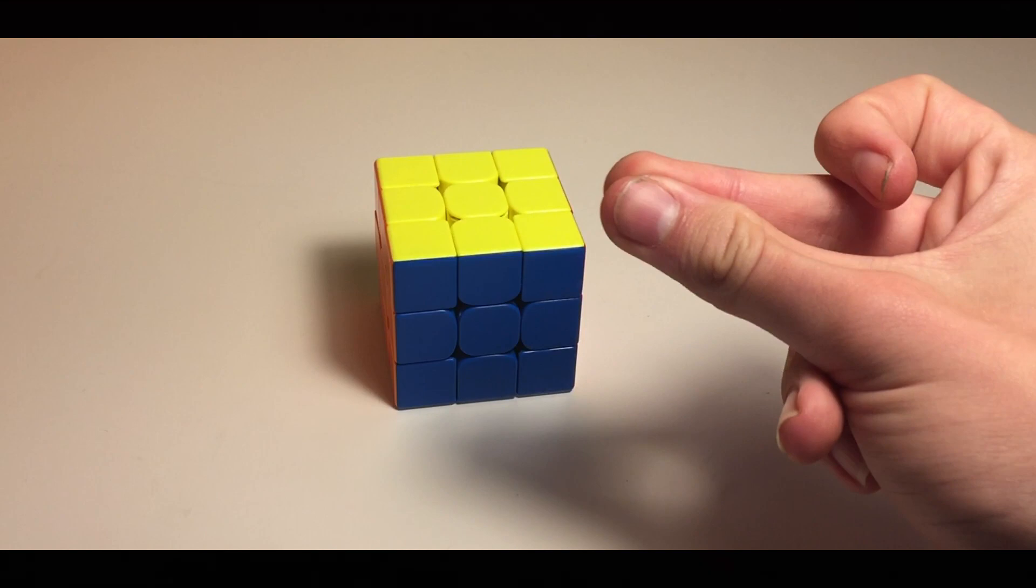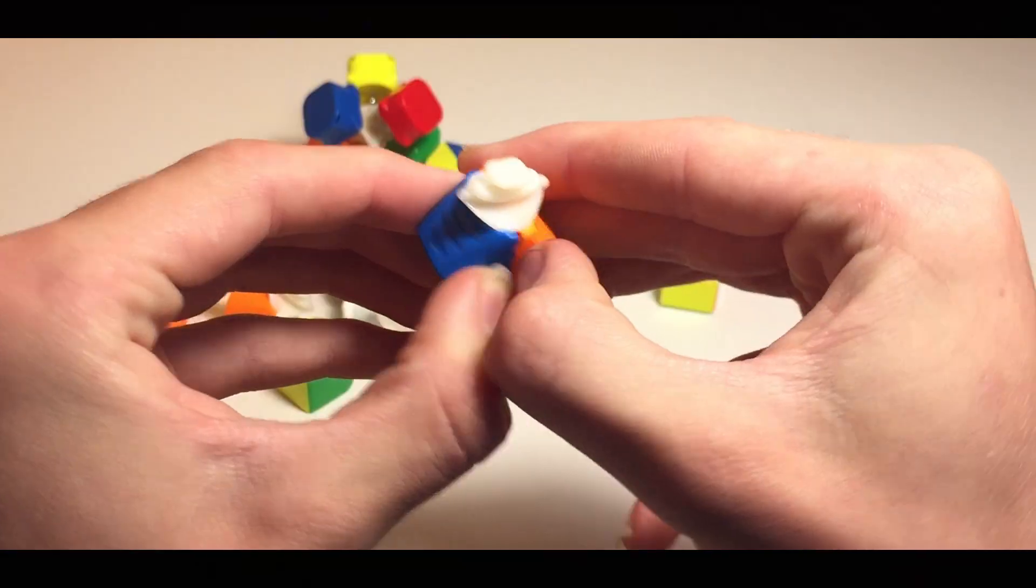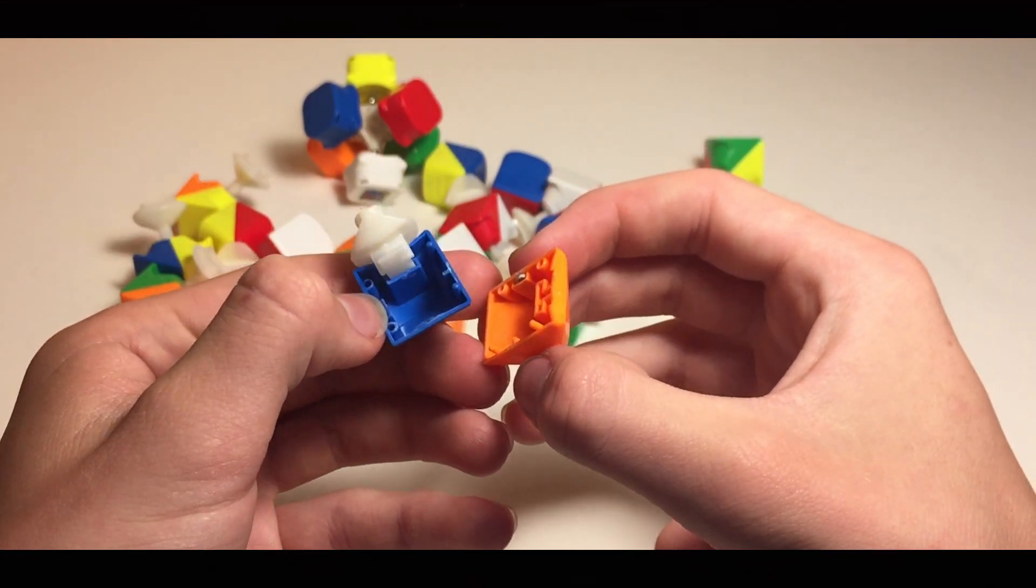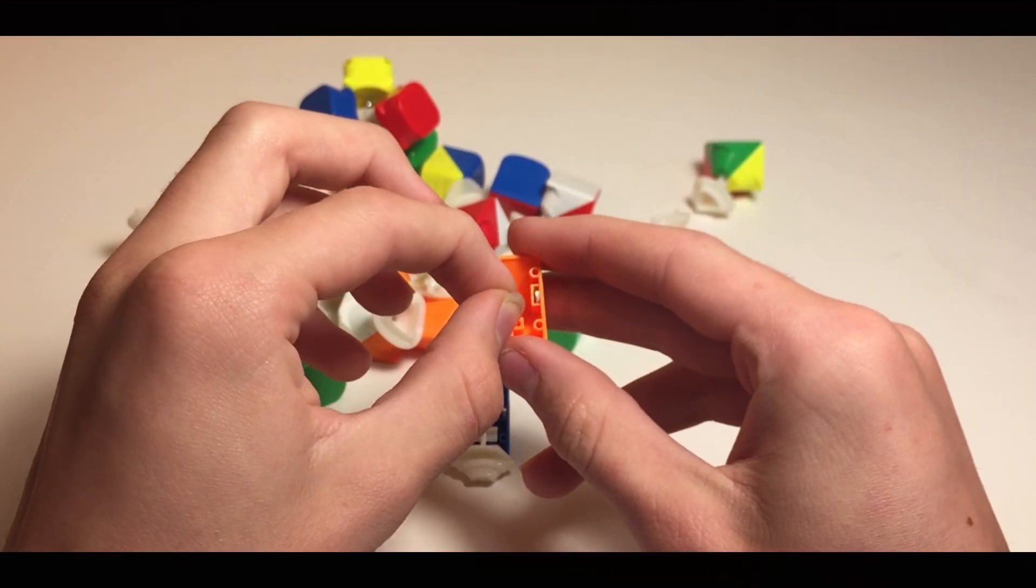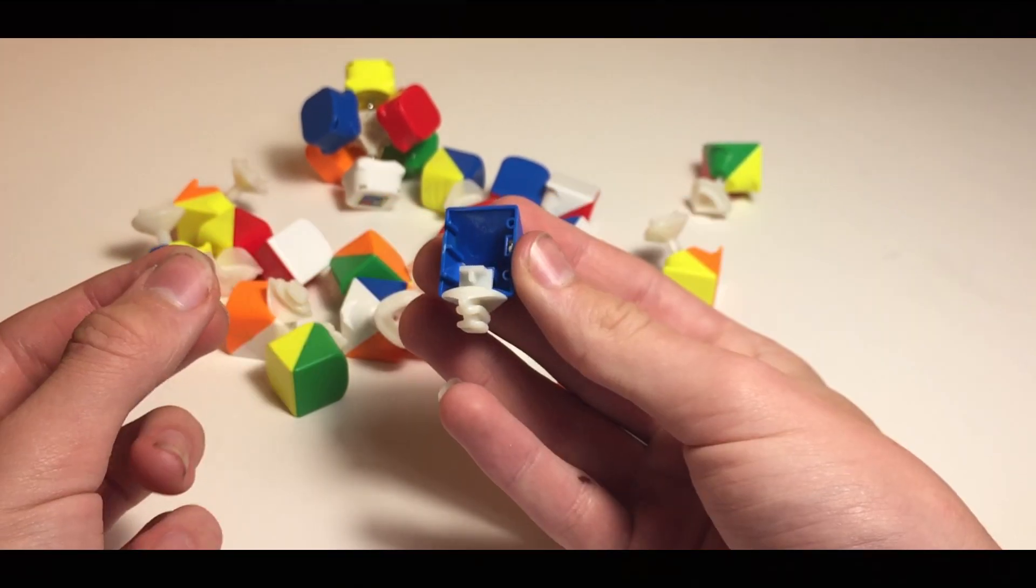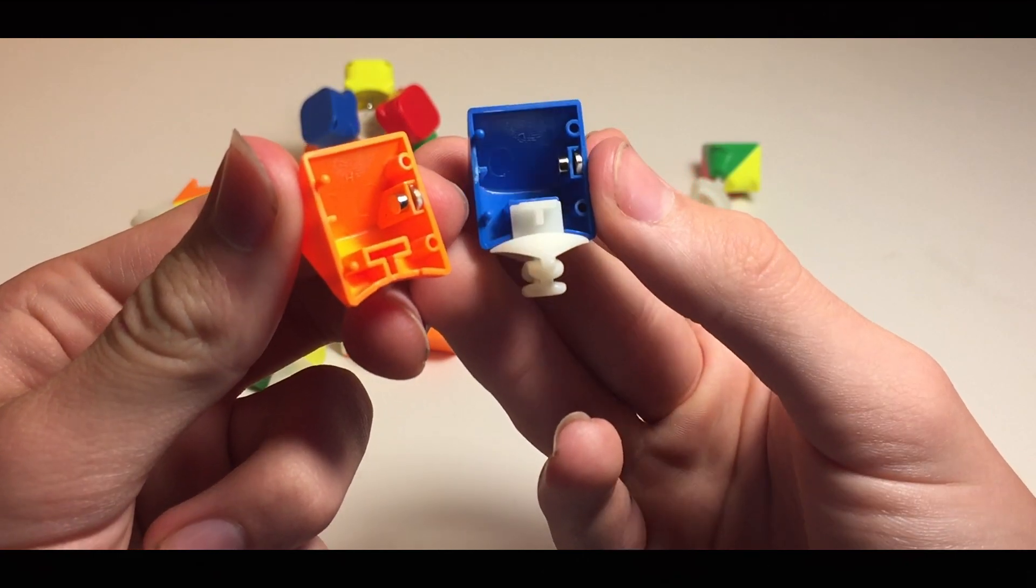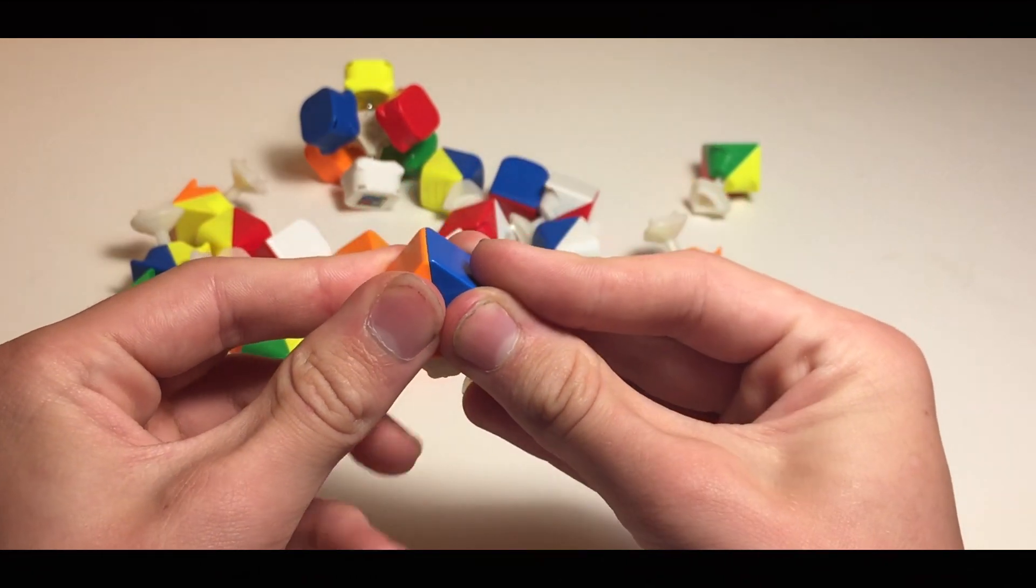Now what you want to do is take an edge, pull it apart, and then take your magnets, grab one, and drop it into the part of the edge where the magnet is currently located. Now take the other half of the edge and do the same thing. Put the edge back together and then just repeat this for all of the other edges.